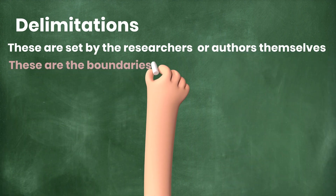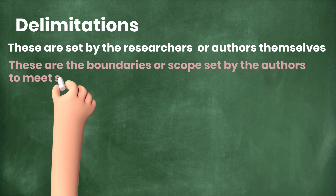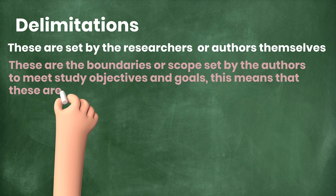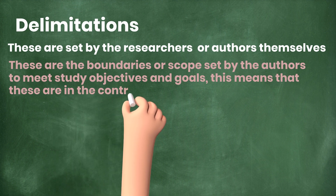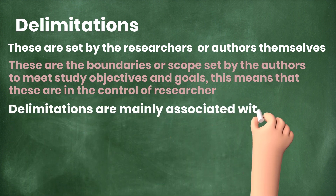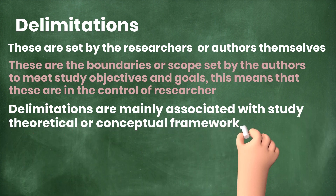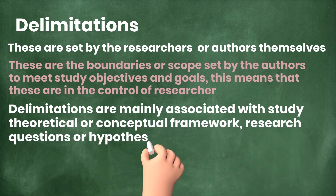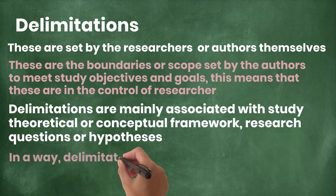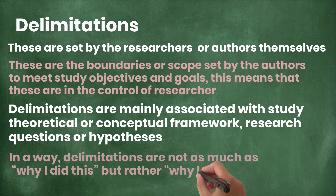Now I'm going to discuss delimitations. Delimitations are set by the researchers or authors themselves. These are the boundaries or scope set by the authors to meet study objectives and goals. This means that these are in the control of the researcher. Delimitations are mainly associated with the study's theoretical or conceptual framework and research questions or hypothesis.